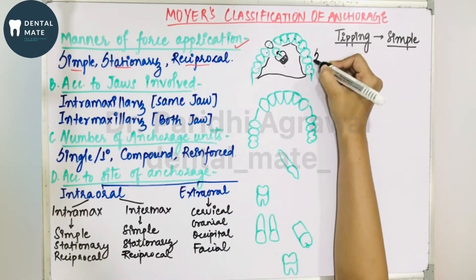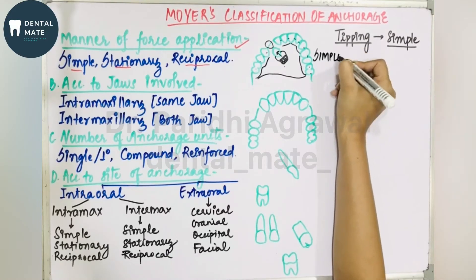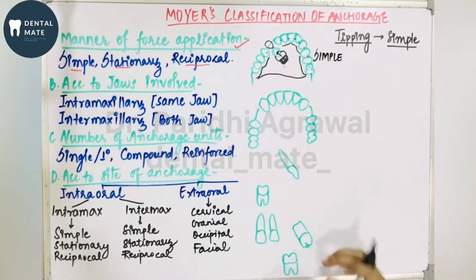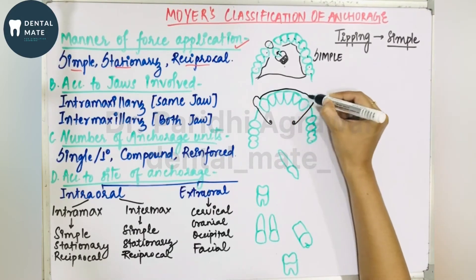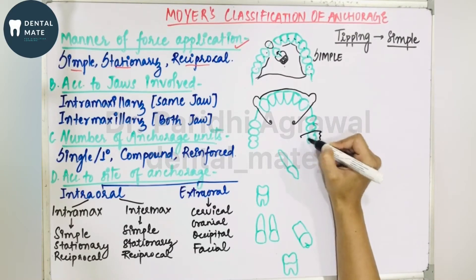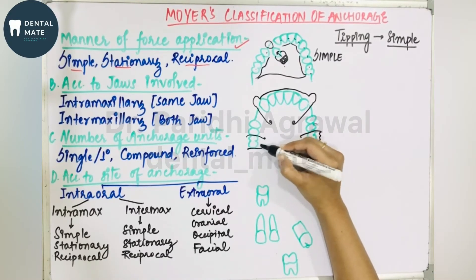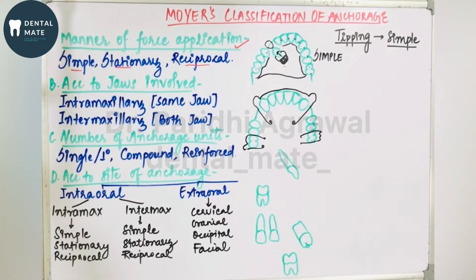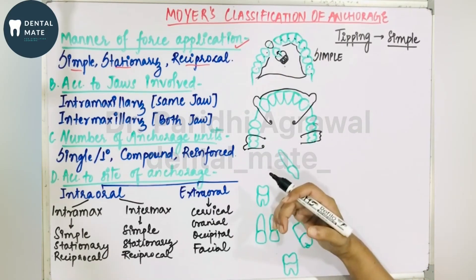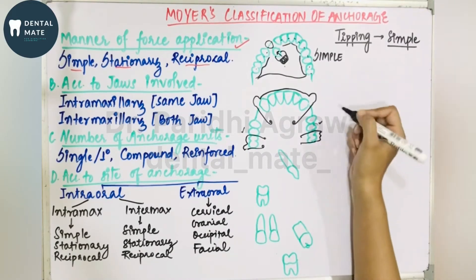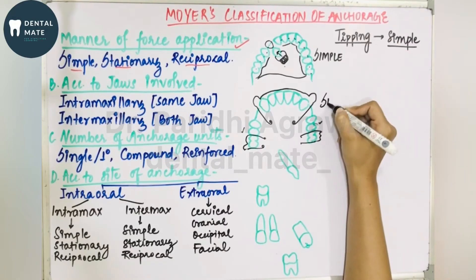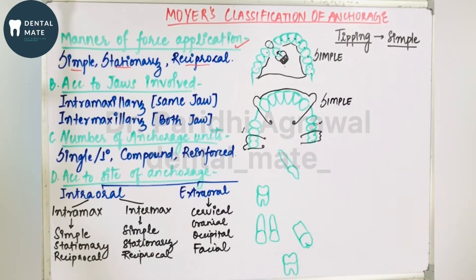Another example of simple anchorage: if the anterior teeth are proclined, we use Hawley's appliance with Adams clasps and a labial bow. All the anterior teeth retract, and the premolars and molars posteriorly are considered the anchor unit. There is resistance to the tipping movement, so Hawley's appliance is also an example of simple anchorage — where there is resistance to tipping kind of movement.